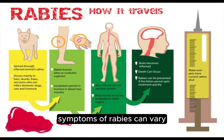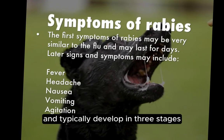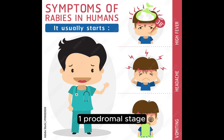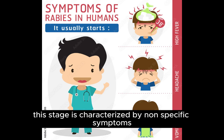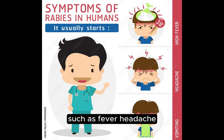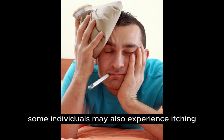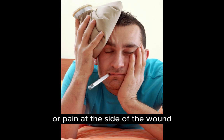Symptoms of rabies can vary and typically develop in three stages. The first is the prodromal stage, characterized by nonspecific symptoms such as fever, headache, malaise, and discomfort at the site of the bite. Some individuals may also experience itching or pain at the site of the wound.